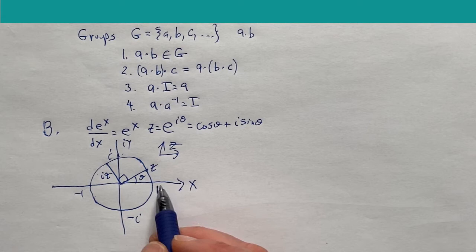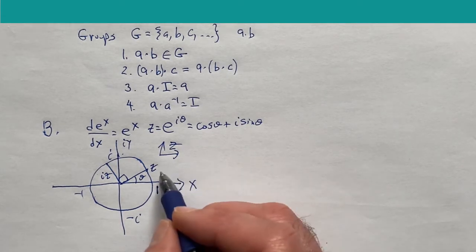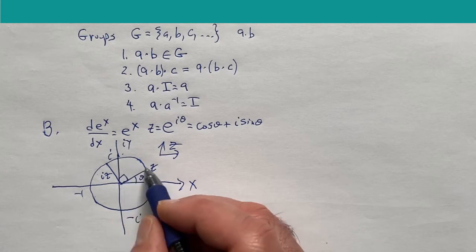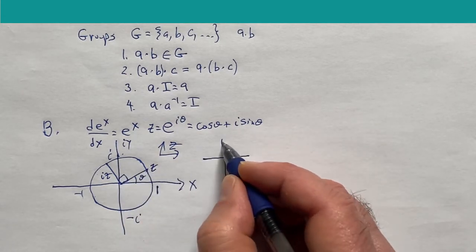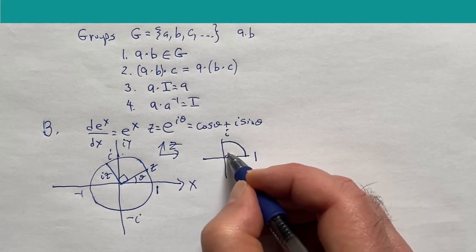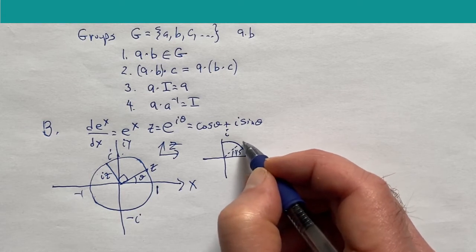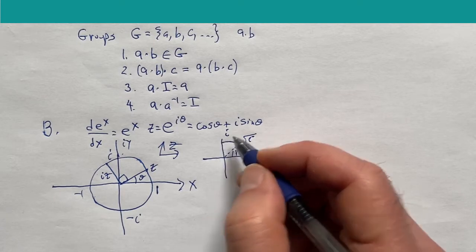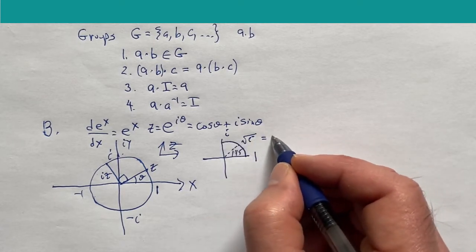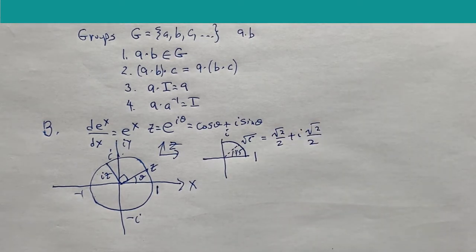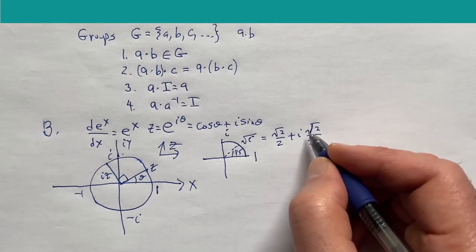This is very nice stuff we can use later, for example when we deal with poles. It's nice to know that if you want to go 90 degrees you multiply by i, but if you want to go 45 degrees you multiply by the square root of i — because square root of i times square root of i is i. And that would be √2/2 plus i√2/2. It's a very nice result.